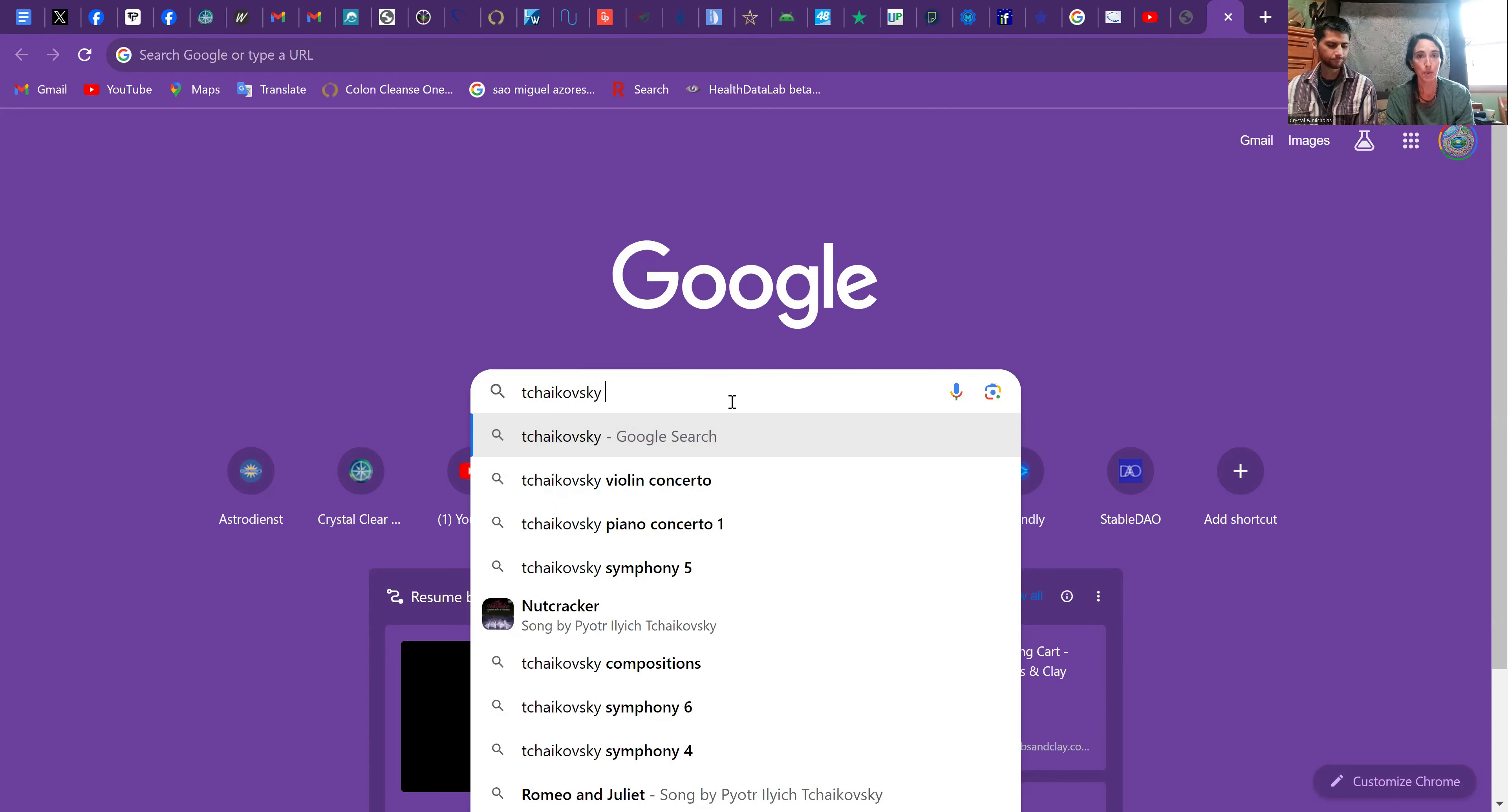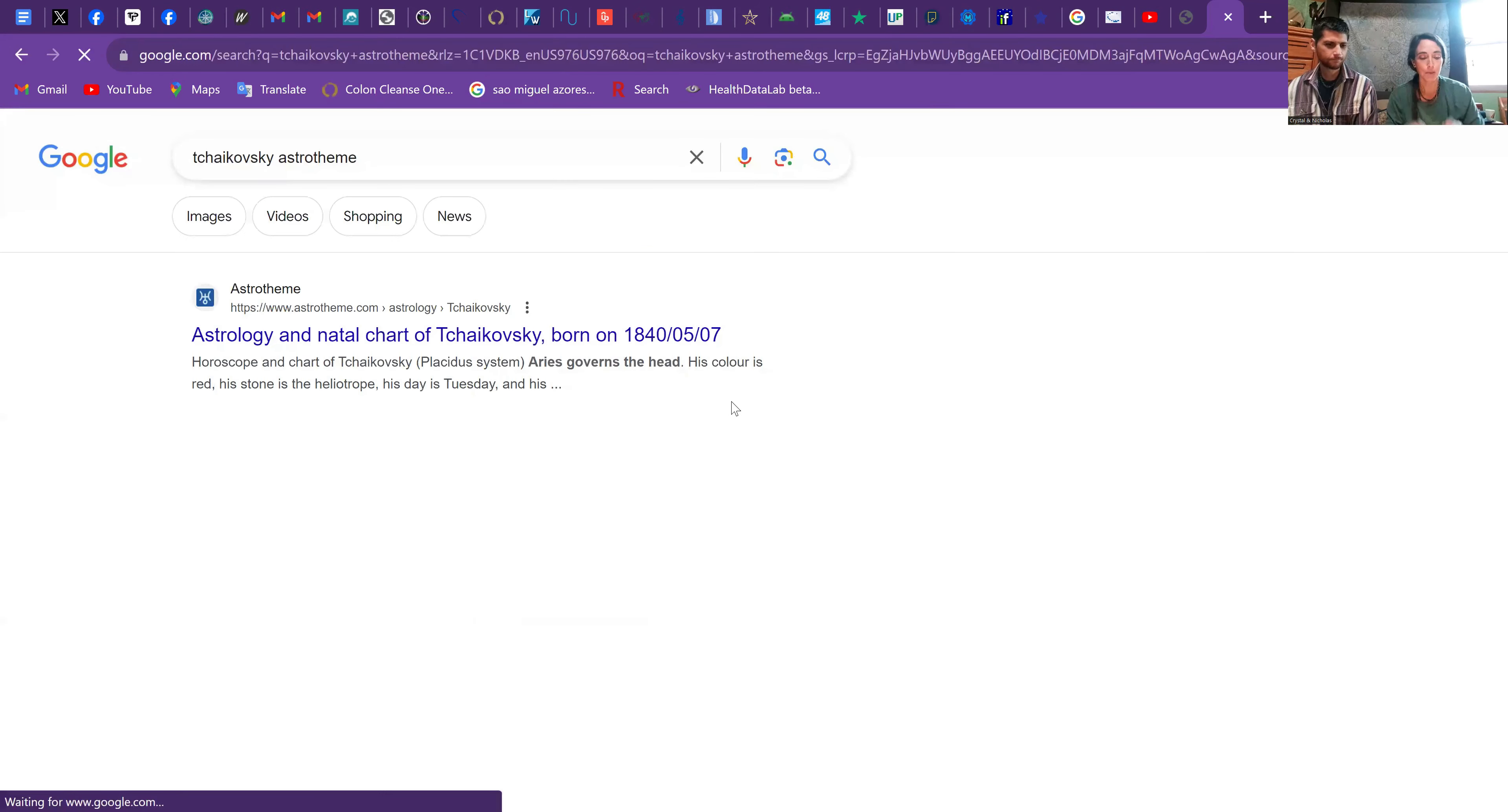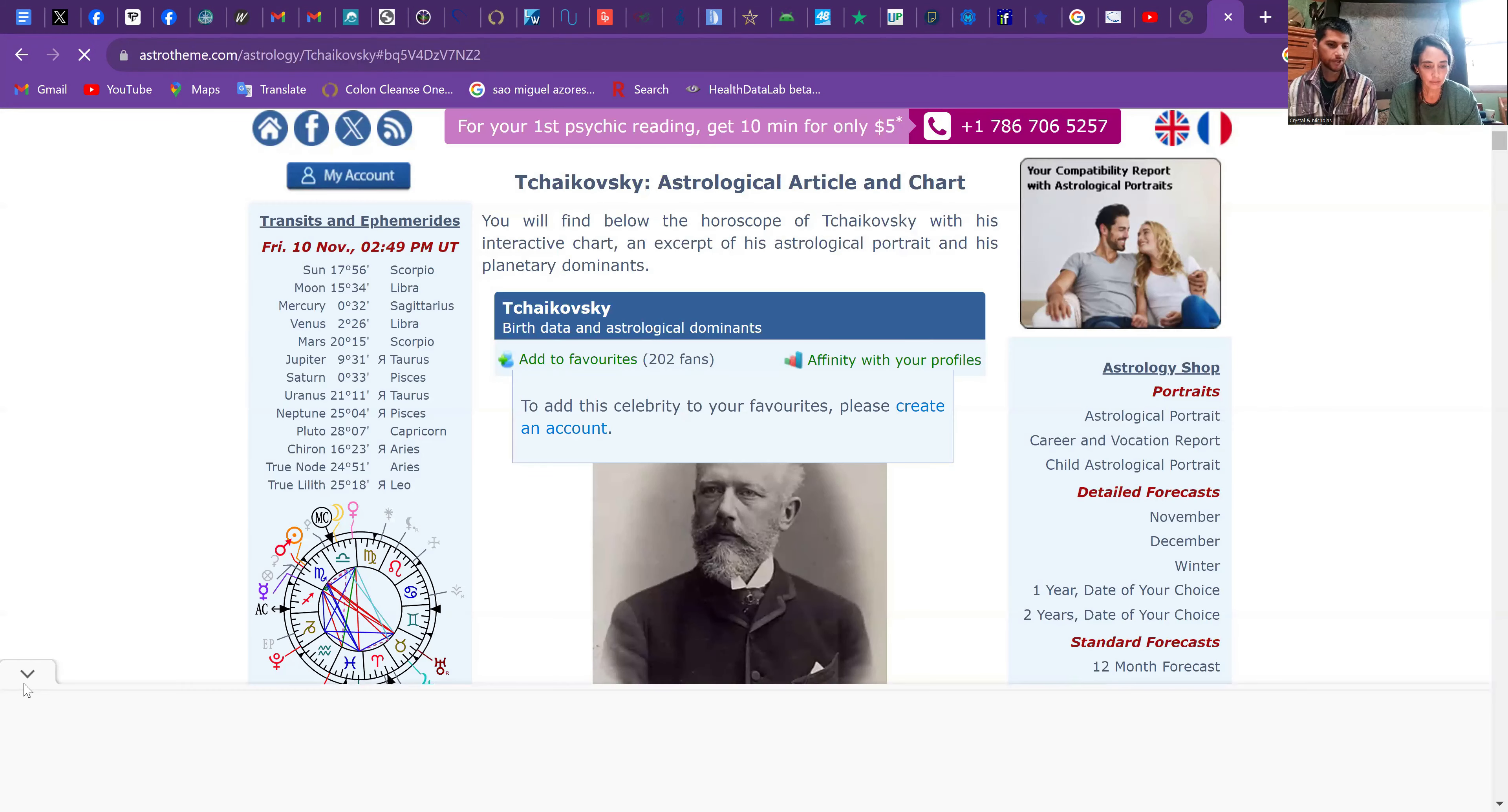First, we look up Tchaikovsky on Astro-Theme, where you can find most famous people's birth charts. We were looking at a picture of him, and Crystal said he looks like a Capricorn because he has this Abe Lincoln type beard.